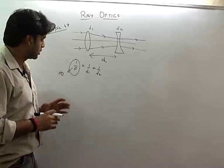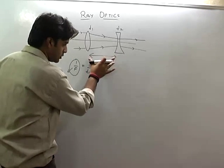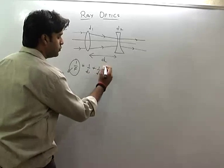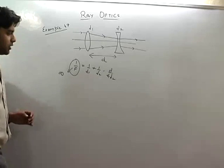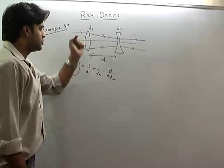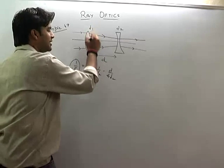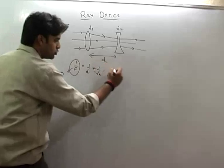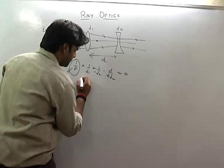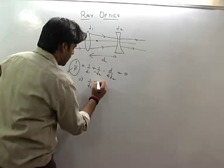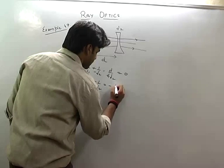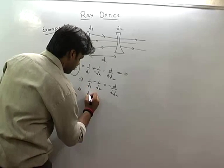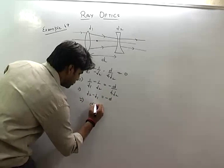That means F (the net focal length) should be infinite. If the two lenses are separated by distance d, then 1/F = 1/f1 + 1/f2 - d/(f1·f2). Since F is infinite, this expression equals 0. The focal length of the divergent lens is -f2, so: 1/f1 - 1/f2 = -d/(f1·f2). This simplifies to: f2 - f1 = -d, meaning d = f1 - f2.